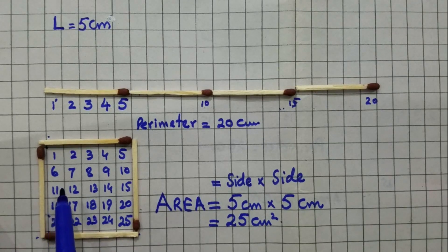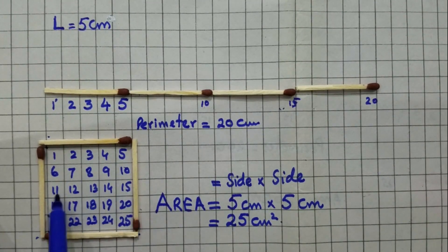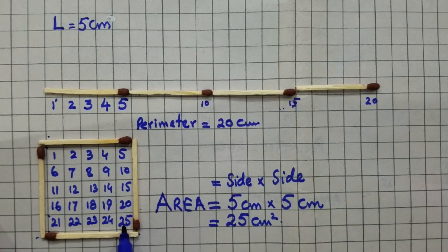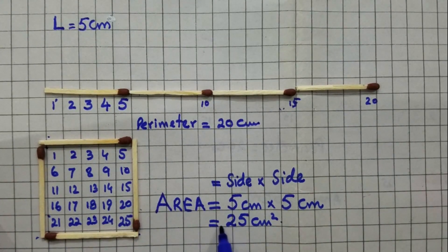Now we count the total squares inside the big square: 1, 2, 3, 4, 5, 6 to 10, 11, 15, 16 to 20, 21 to 25. We get 25 squares in this big square, which means the area of the big square is equal to 25 square centimeters.